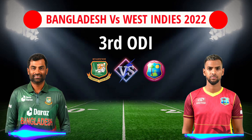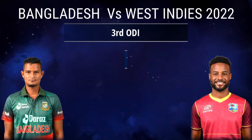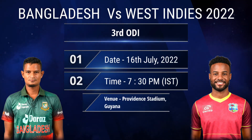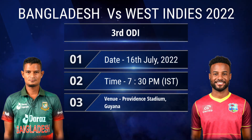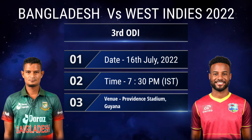Bangladesh vs West Indies third and last ODI match details and both teams' playing 11. Date: 16 July 2022, 7:30 PM Bangladesh Standard Time. Venue: Providence Stadium, Guyana.